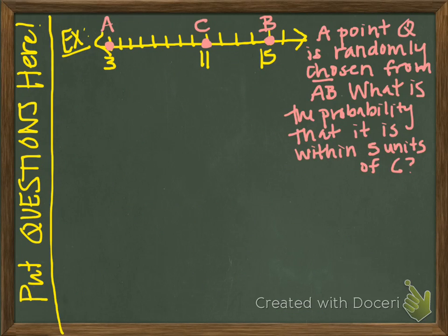Here's another example. We are given a number line that goes from point A at 3 to point C at 11 and point B at 15. We are told that a point Q is randomly chosen from segment AB. Segment AB starts at A and goes all the way to B, so we could choose the point from any position along that entire segment.